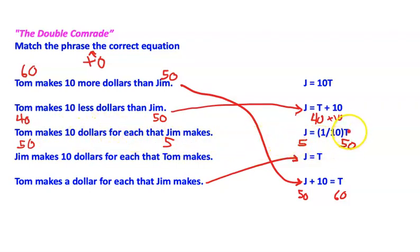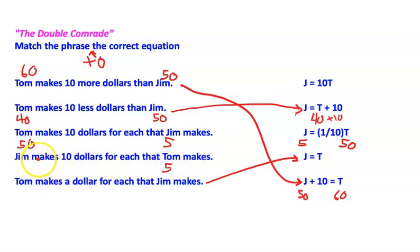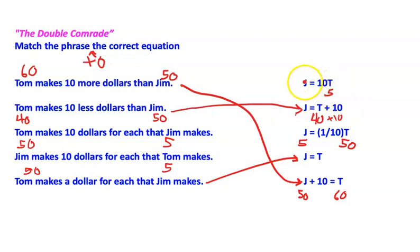Now: Jim makes ten dollars for each that Tom makes. So let's say Tom has five dollars — Jim would make fifty. Ten times five equals fifty. So this phrase matches this equation: Jim equals ten times Tom.